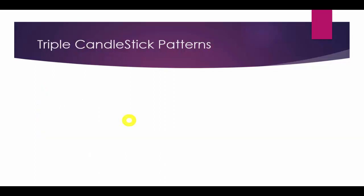And then in the end, we have triple candlestick pattern series. These are formed with triple candles. These include morning star, evening star, three inside up, three inside down, and then three white soldiers and three black crows.